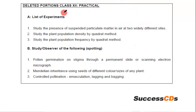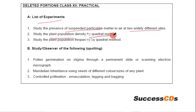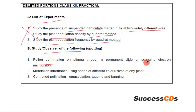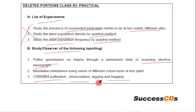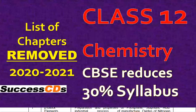Now let us see what has been deleted from class 12 Biology practicals. The experiments deleted are: study of the presence of suspended particulate matter in air at two widely different sites; study of plant population density by quadrat method; study of plant population frequency by quadrat method. From spotting: pollen germination on stigma through a permanent slide or scanning electron micrograph; Mendelian inheritance using seeds of different color/sizes of any plant; controlled pollination — emasculation, tagging and bagging. All of these are deleted.